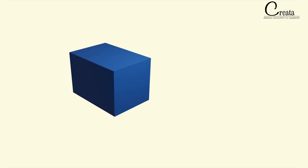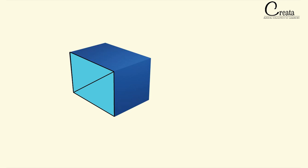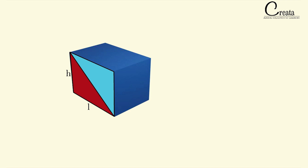If we take this rectangle, which is this face of the cuboid, the dimensions are L and H. We can calculate the face diagonal by applying the Pythagorean theorem — hypotenuse squared equals the sum of the squares of the legs of the triangle. Here we can visualize the right angle triangle with dimensions L and H, giving us the face diagonal as √(L² + H²).